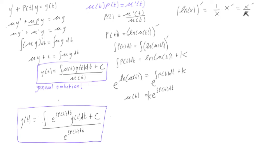If you're given a problem with the form y prime plus p(t) y equals g(t), you'll be given p(t) as part of the problem, and you'll be able to solve for mu(t) and write the general solution in this form. We're going to do that in the next video with an actual problem with real numbers. I'll see you guys there.